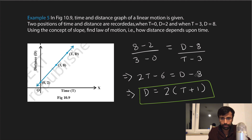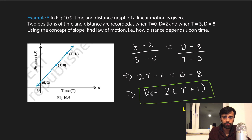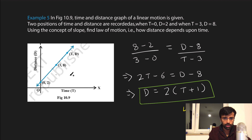Solving: D = 2T + 2, which we can write as D = 2(T + 1). We can verify: when T = 0, D = 2(0+1) = 2 ✓; when T = 3, D = 2(3+1) = 8 ✓. So this is the general distance-time relation.